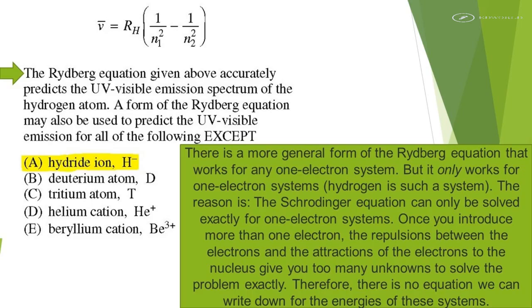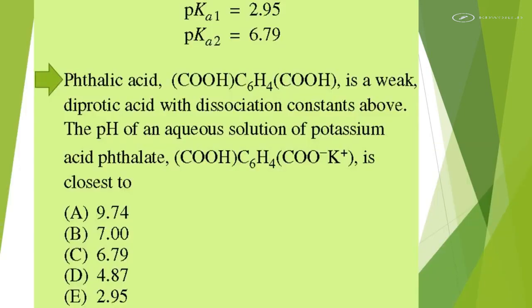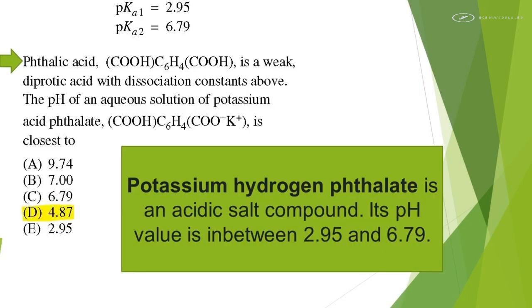Therefore, there is no equation we can write down for the energies of these systems. The pH of an aqueous solution of potassium hydrogen phthalate is closest to, potassium hydrogen phthalate is an acidic salt compound. Its pH value is between 2.95 and 6.79.